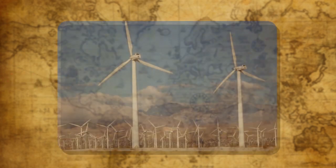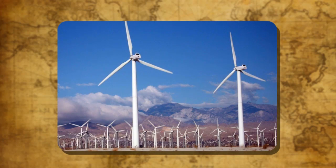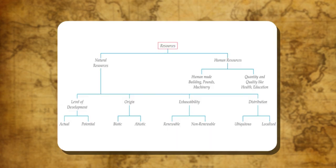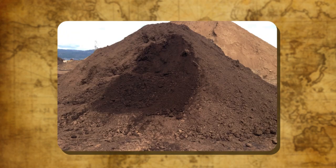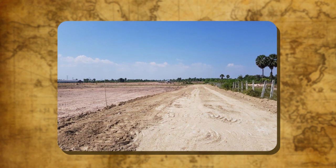Types of resources: Resources are of various types. Generally, they are classified as natural or human resources. Natural resources are those resources that are obtained from nature and used without much modification. Air, water, minerals, soil, land, etc. are examples of natural resources.